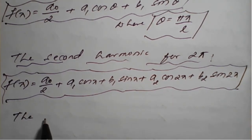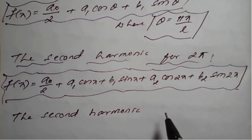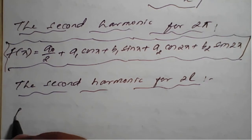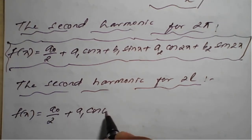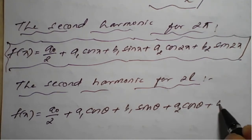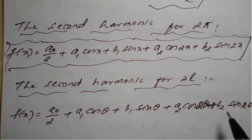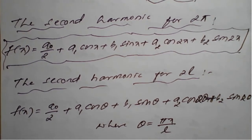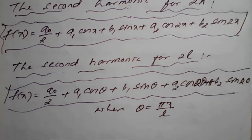For period 2l, the second harmonic is: f(x) = a₀/2 + a₁ cos(θ) + b₁ sin(θ) + a₂ cos(2θ) + b₂ sin(2θ), where θ = πx/l. This is the second harmonic for period 2l.